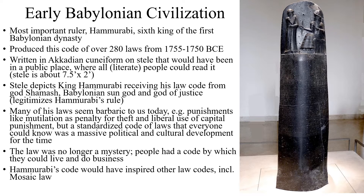It's also worth noting that Hammurabi's code contained a presumption of innocence, meaning that an accused person — a defendant — would be treated as innocent until proven guilty, just like the modern American legal code. Hammurabi's law code would have inspired other ancient legal codes, including the Mosaic law, which is described in the Old Testament or the Torah, the Jewish books of the law.